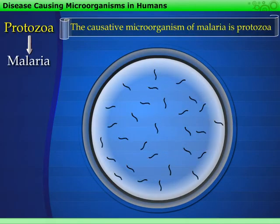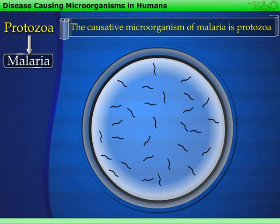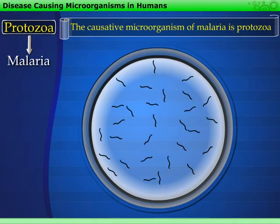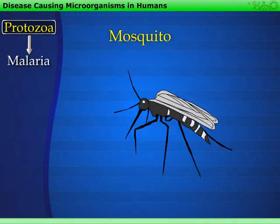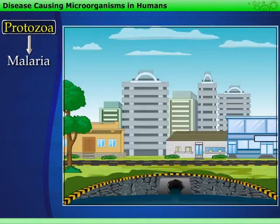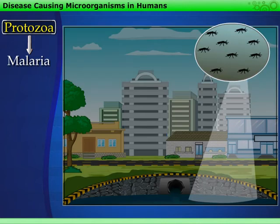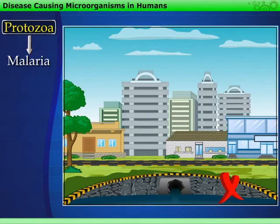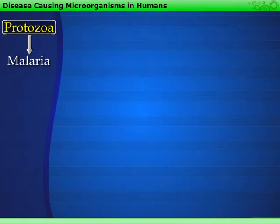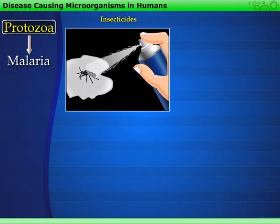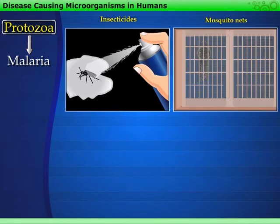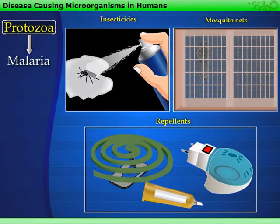The causative microorganism of malaria is protozoa. The mode of transmission of this disease is mosquitoes. Since mosquitoes breed in water, care should be taken that no unnecessary stagnant water is accumulated in our surroundings. Also, use of insecticides, mosquito nets and repellents can help in preventing the spread of this disease.